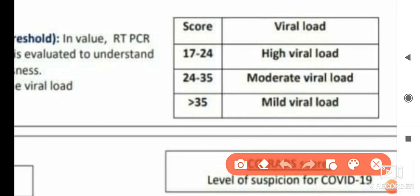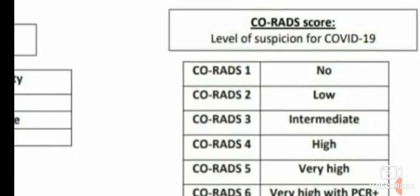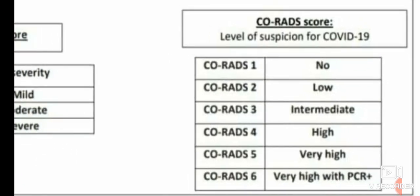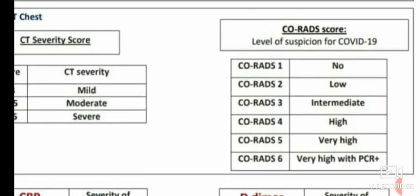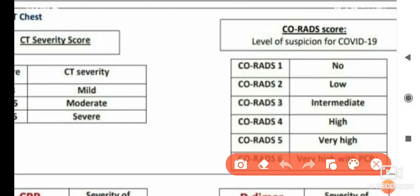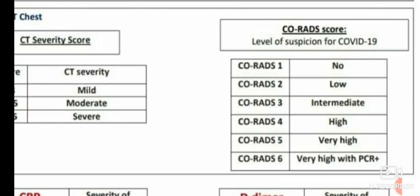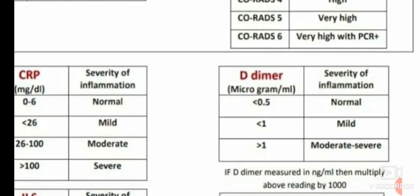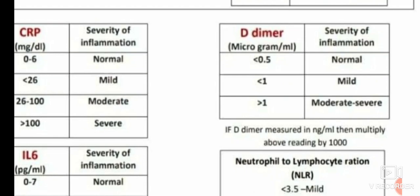For viral load score: 17 to 24 is high viral load, 24 to 35 is moderate, and more than 35 is mild viral load. For the CORADS score: CORADS 1 is negative, 2 is low, 3 is intermediate, 4 is high, 5 is very high, and 6 is very high with PCR positive.